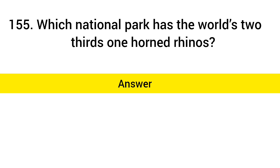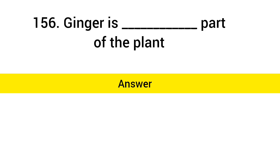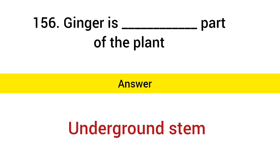Which national park has the world's two-thirds one-horned rhinos? Answer: Kaziranga National Park. Ginger is which part of the plant? Answer: Underground stem.